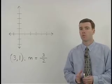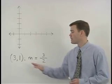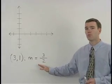In this problem, we're asked to graph the line that contains the point (3, 1) and has a slope of 3 halves.